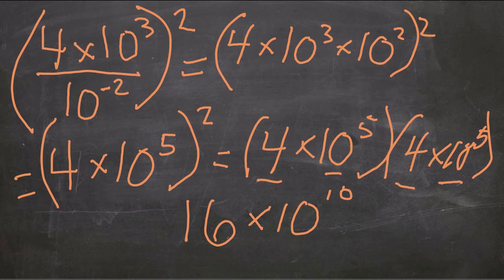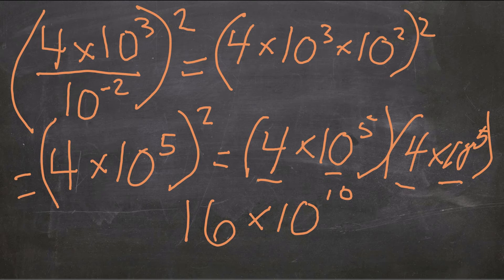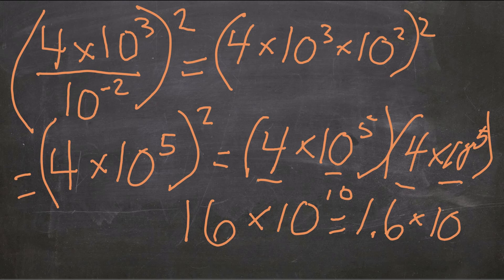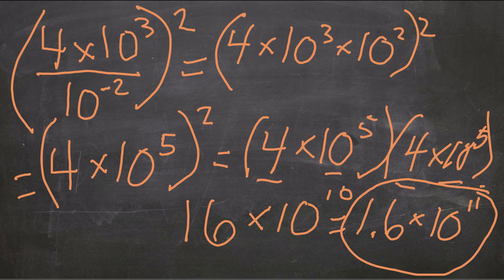So instead of having 10 to the power of 10, we need to move that decimal over so it becomes 1.6. That means we need to add an extra exponent to the base 10 so that we get the same value that we started with. So now instead of 16 times 10 to the power of 10, we get 1.6 times 10 to the power of 11. And that's our final answer.